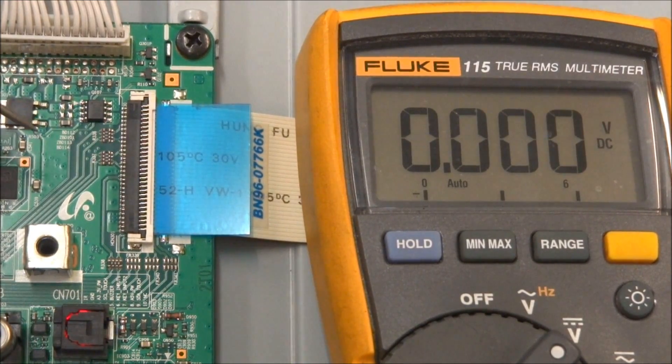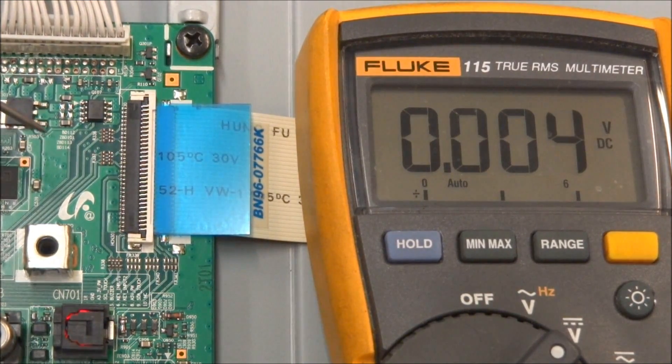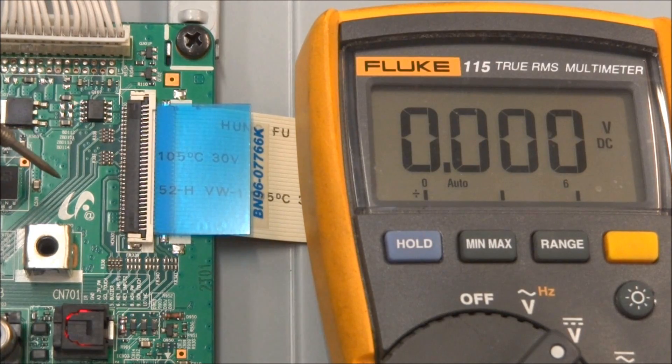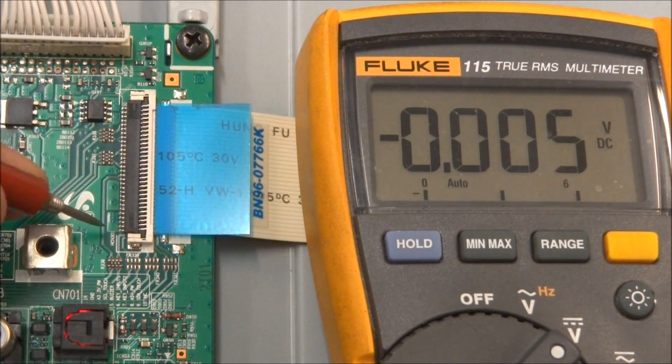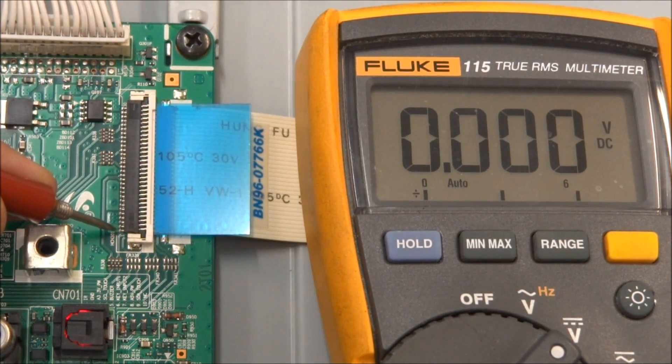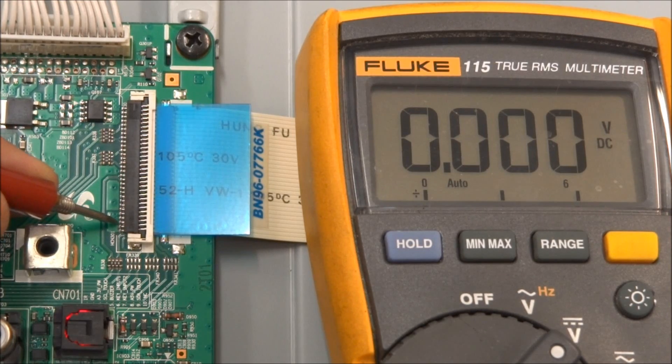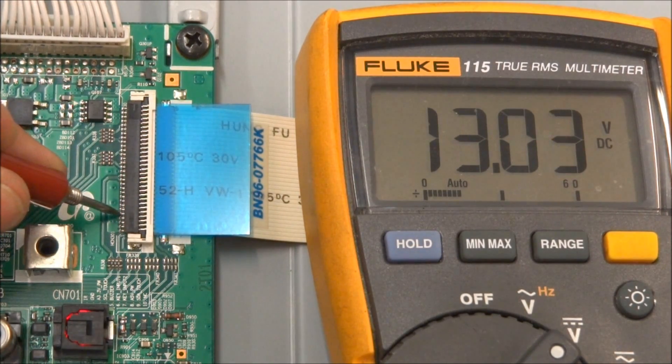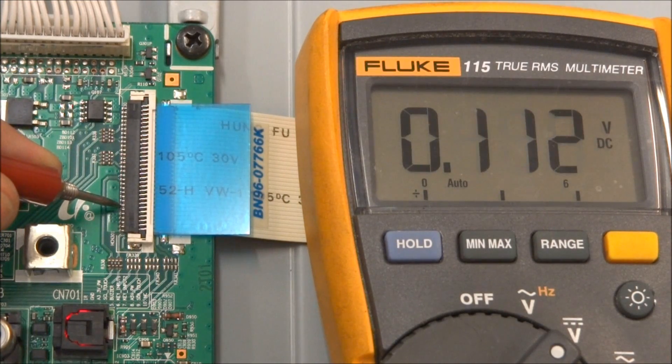So let's take a look at the voltages on the LVDS cable that drive the LCD panel. This one does not have a timing controller board, so it drives the LCD panel directly. So on these first few pins, it looks like pins 1, 2, 3, 4, and 5. I should see 13 volts.